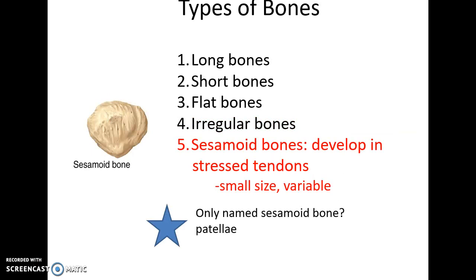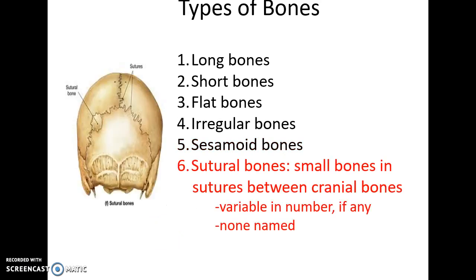Sesamoid bones are bones that develop within tendons that are under a lot of stress. The only sesamoid bones most humans possess are the two patellae; all other sesamoid bones someone might have are random occurrences and have no names of their own. Finally, there are sutural bones — small bones found within the junctions of cranial bones. A small bone is found in the suture there. Sutural bones vary in number from person to person and do not have their own names.